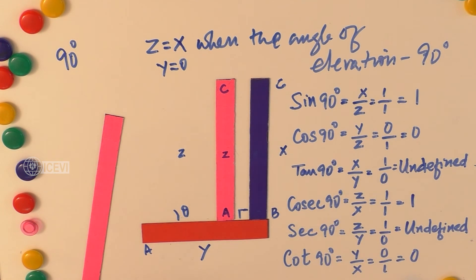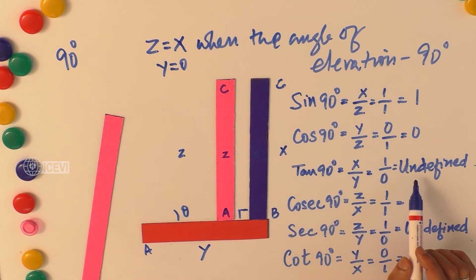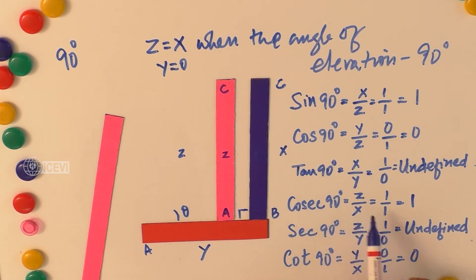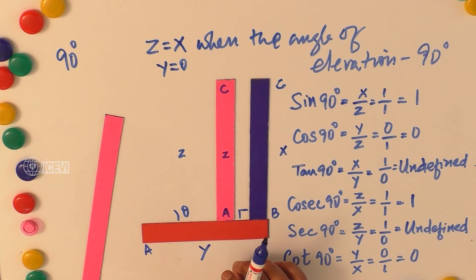So the trigonometric ratios of 90 degrees have been found out using this practical example. The results are: sin 90° = 1, cos 90° = 0, tan 90° = undefined, cosecant 90° = 1, secant 90° = undefined, and cot 90° = 0.